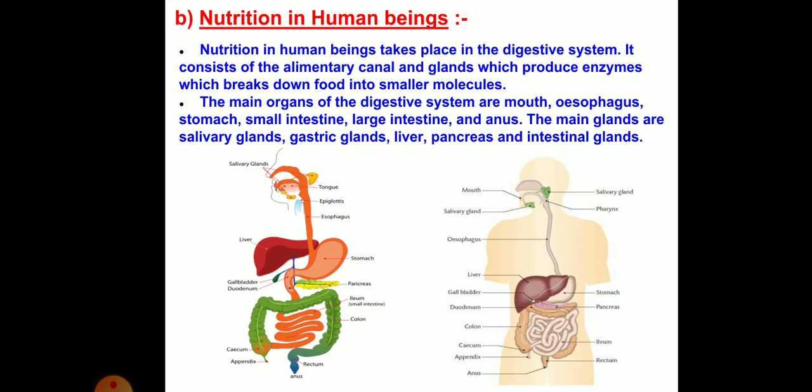The main glands are salivary glands, gastric glands, liver, pancreas, and intestinal glands.